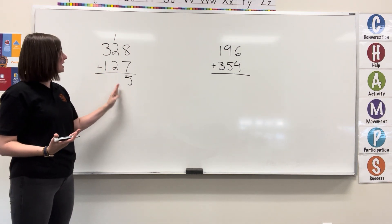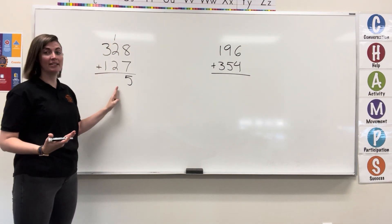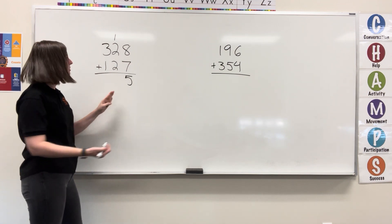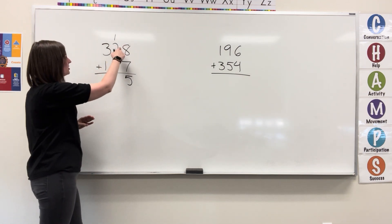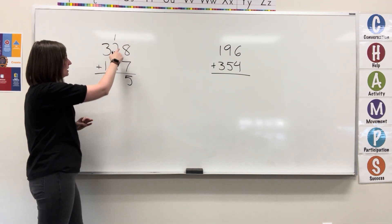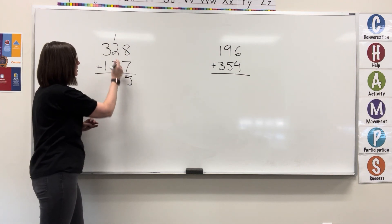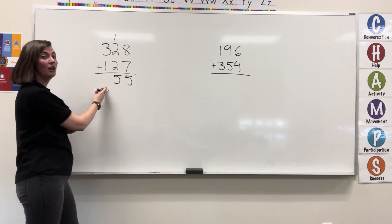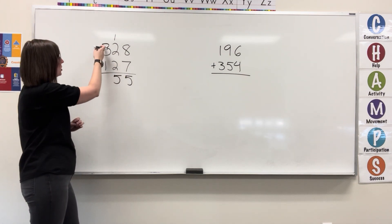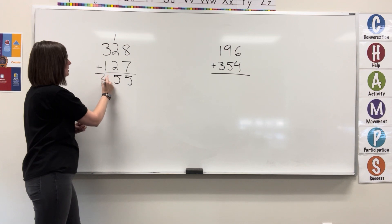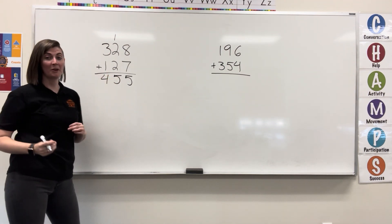Now we're going to add our next column, which is the tens place value. 1 plus 2 is 3, plus 2 is 5. Moving on to the hundreds column, 3 plus 1 is 4.